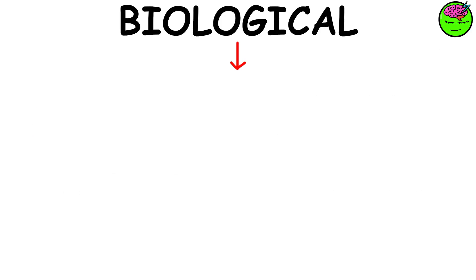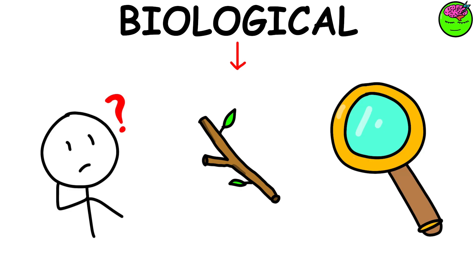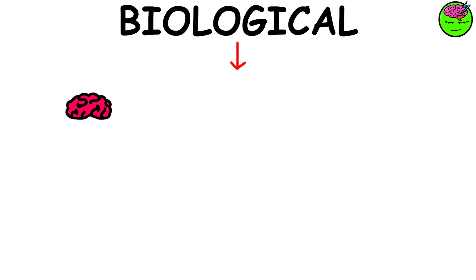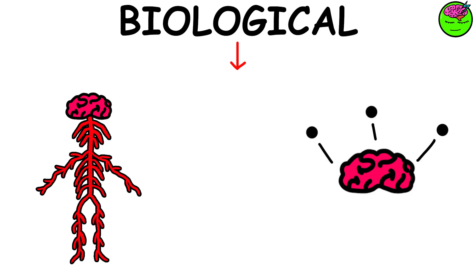Biological psychology. Biological psychology is a branch of psychology that focuses on how biological influences, specifically the brain and nervous system, influence the human mind and behavior.